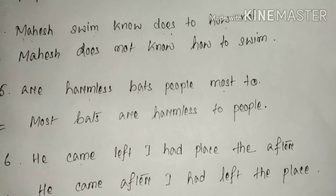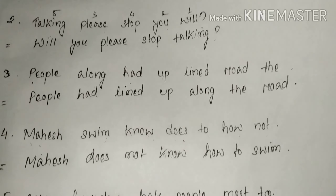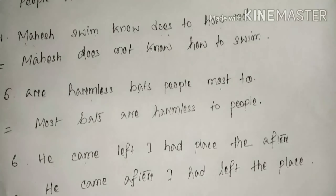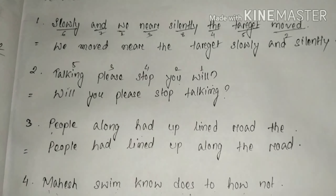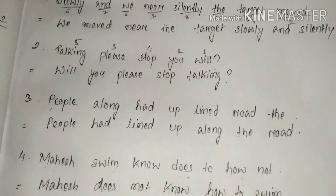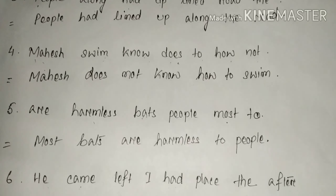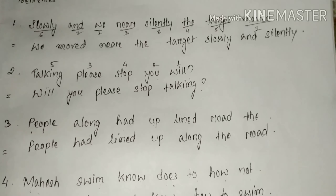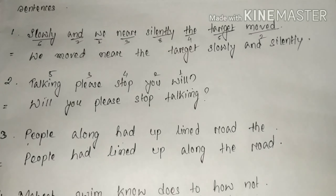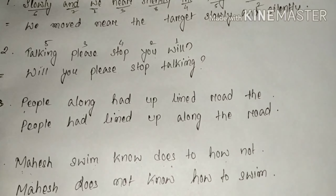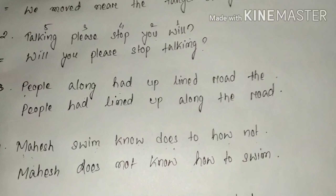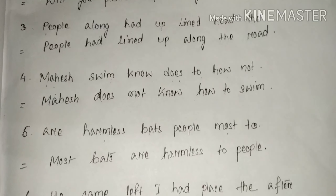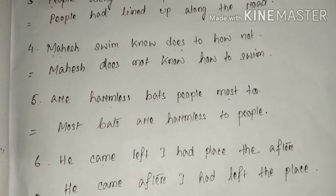We are done. We are almost done. We have done 7 sentences here. I think you have got it, and I hope you will practice it. It is very easy, very simple. You only have to arrange the words and you can do it very easily. Purchase a question bank or collect it from some of your seniors and practice more. If you don't practice, you can't get it. Alright then, we will meet again with some other new topic in our next class. Till then, thank you all.